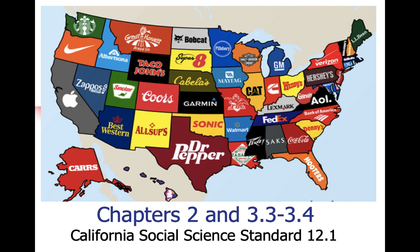We're going to get started. With this next chapter or two, we're looking at all of chapter two and then sections 3.3 and 3.4. Both of these texts are on Google Classroom so you can check those out. Really what we're going to look at is these choices and how people make them on a larger scale.